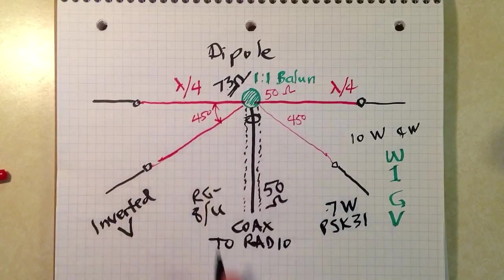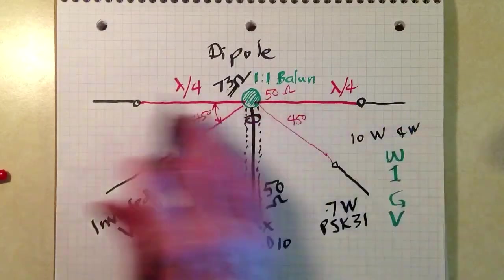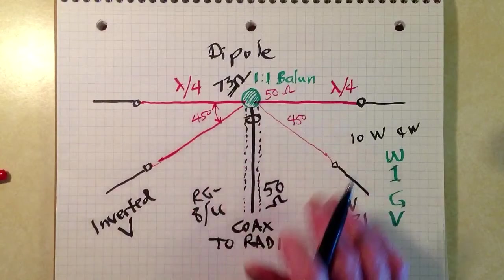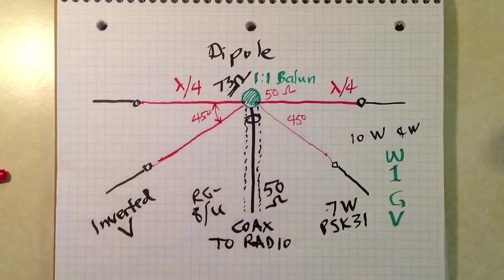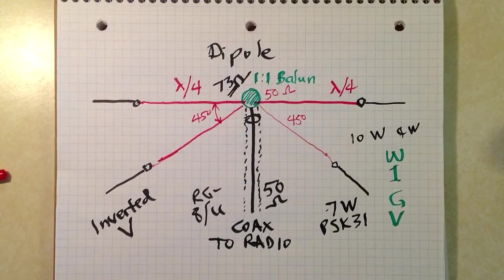Another advantage of the inverted V is the fact that you get better radiation off the ends. That is, in the directions that the wires generally run. With a dipole, low angle radiation off the ends, if you get that thing up very high, is not going to be good.